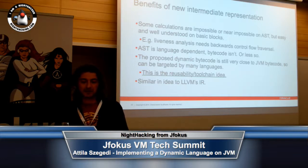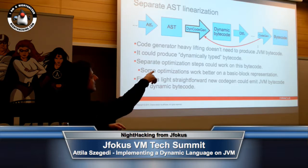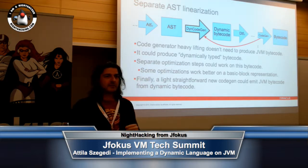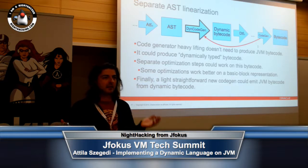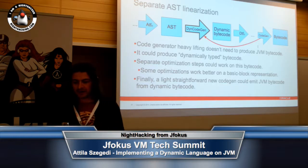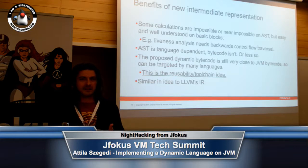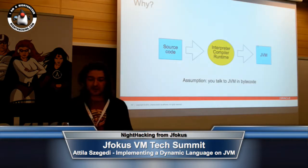ASTs are language independent. Bytecodes aren't, or at least they are less so, which actually would allow us — if we go back here to all of the DTBC part — all the optimizations that happen on this dynamic bytecode level, which includes static type calculation and so on, this could be fed in by language runtimes other than Nashorn. And this is basically our reusability slash toolchain idea for dynamic languages on the JVM. Our typical elevator pitch for this is like LLVM, just for JVM bytecode.